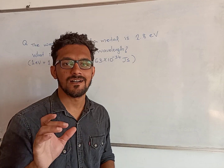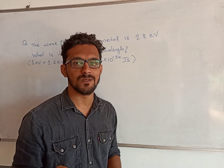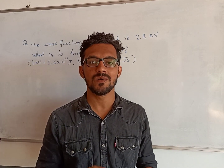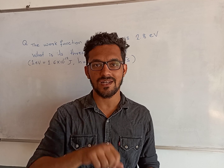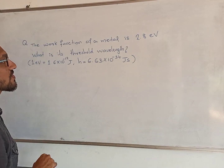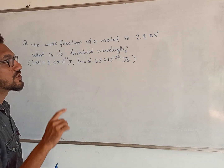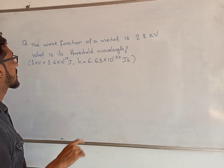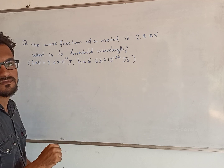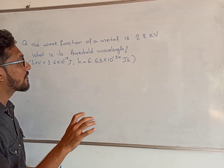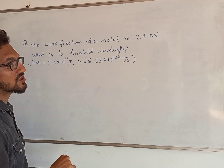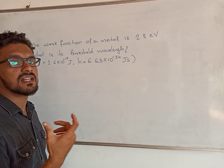Dear students, let me ask you a question. The work function of a metal is 2.8 electron volt. What is its threshold wavelength? I will tell you what the wavelength is.